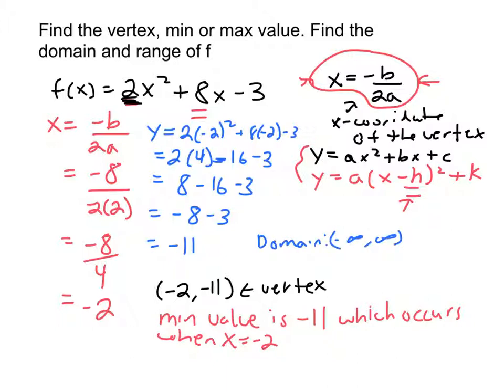Now what about the range? Now if we were to, I'm just going to just sketch this. Now I have way down here, if this is negative 11, and this is negative 2, that's my vertex.